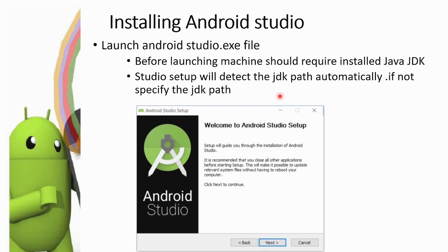Next is installing Android Studio. We launch the Android Studio .exe file. Before launching, the machine should have Java JDK installed as a prerequisite. The Android Studio setup will detect the JDK path automatically; if not, we can specify the JDK path manually. This will be the initial launching window of the Android Studio setup.